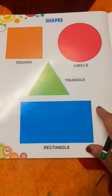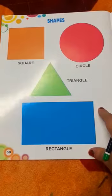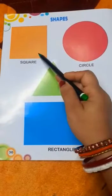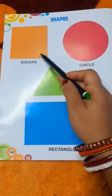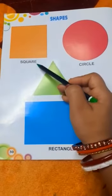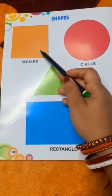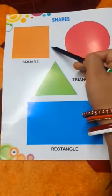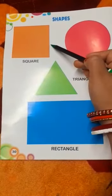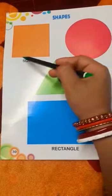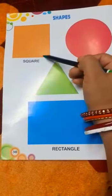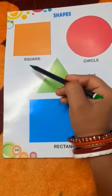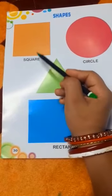Children, look at here. This is a square. What is the spelling of square? S-Q-U-A-R-E, square. It has four sides: one, two, three, four. It has four sides. Its all sides are equal. What is the spelling of square? S-Q-U-A-R-E, square.